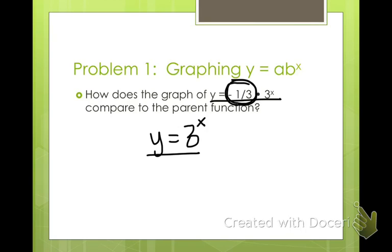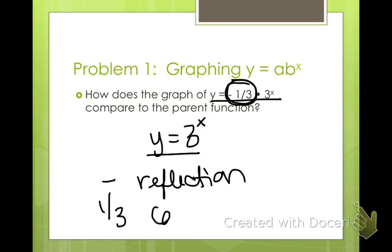Well we have this negative 1 third here. So since it's negative, the negative means it's going to be a reflection across the x axis. And then what is that 1 third going to do? Well it's between 0 and 1, so that's going to be a compression by a factor of 1 third. Make sense? Pretty easy.